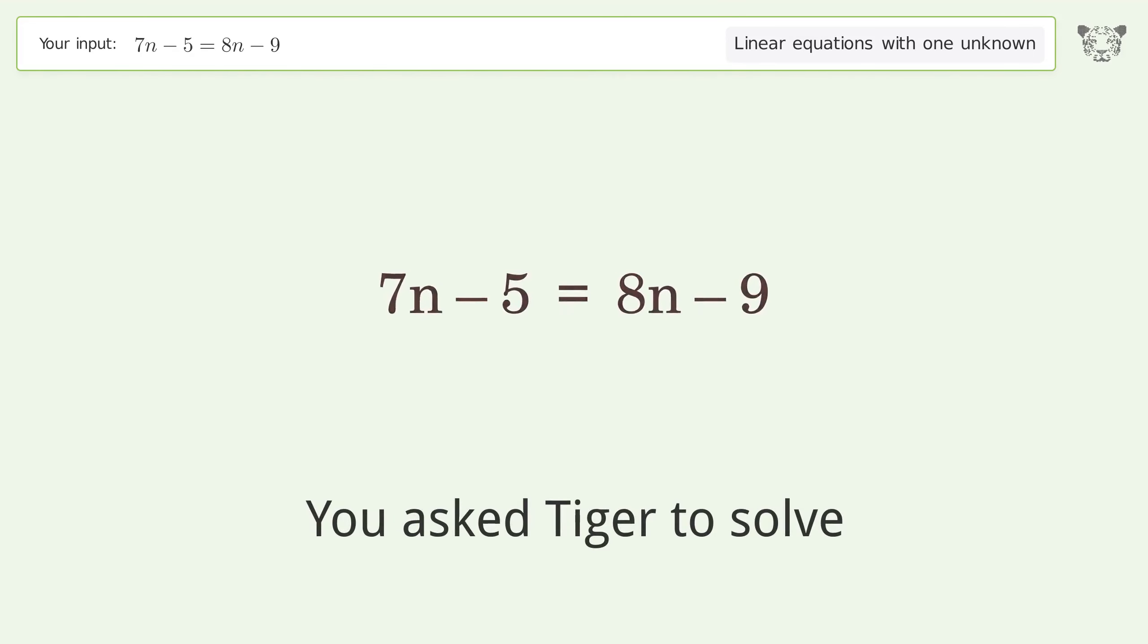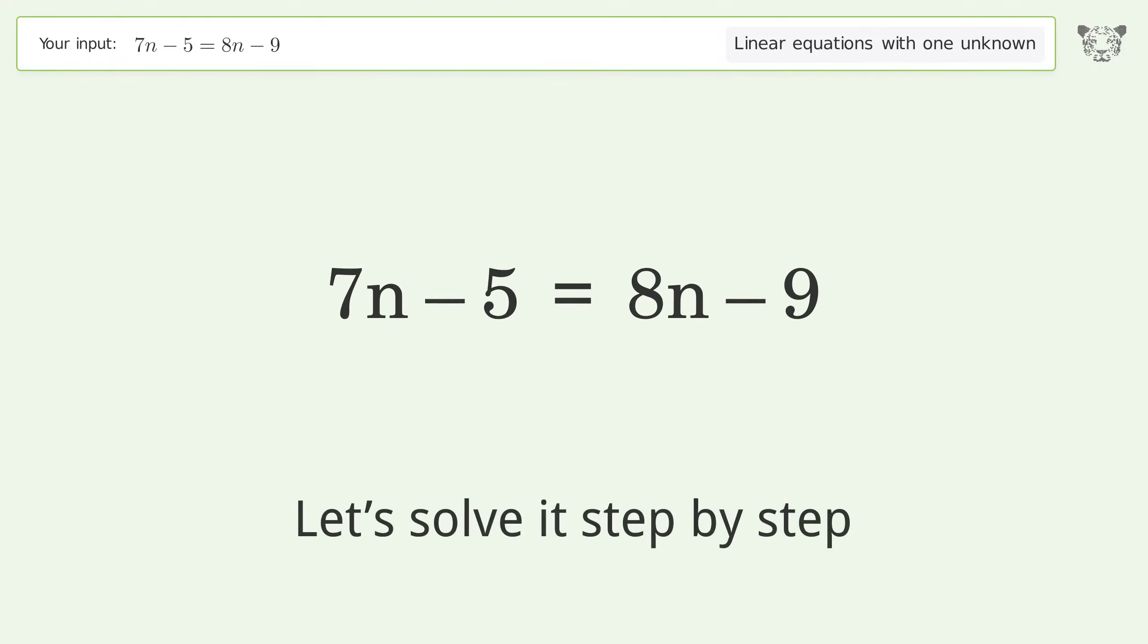You asked Tiger to solve. This deals with linear equations with one unknown. The final result is n equals 4. Let's solve it step by step.